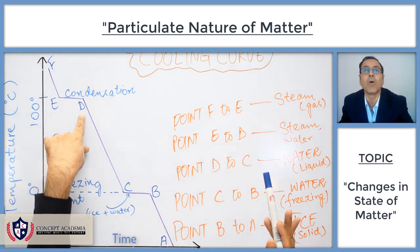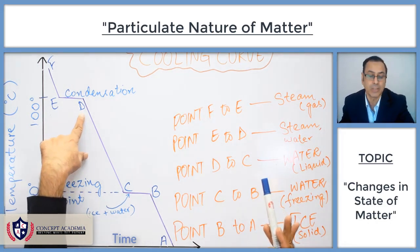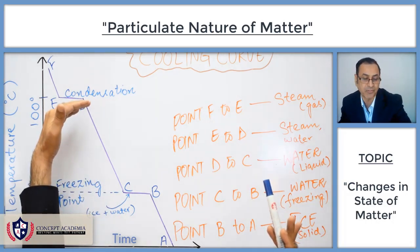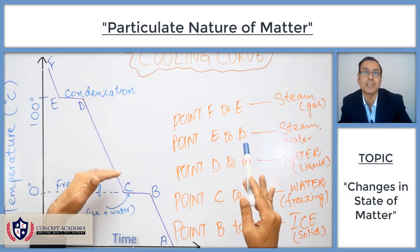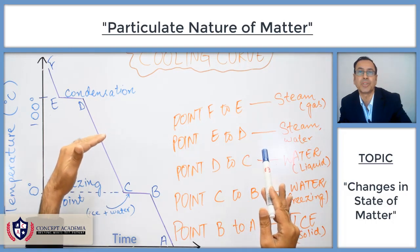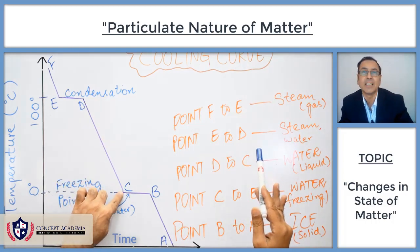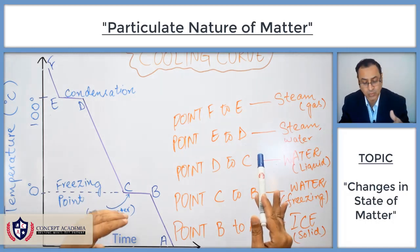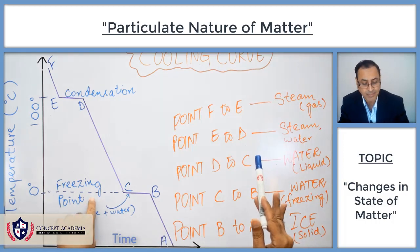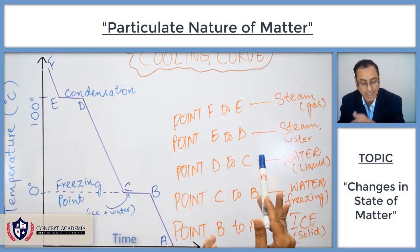To point D, all the steam has converted into liquid water. From point D to C, the temperature of the liquid water is going down and down. From point C, the liquid water is converting into ice. So this is the freezing point, when liquid water is converting into ice.